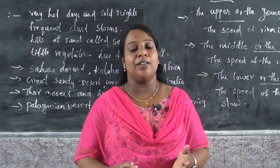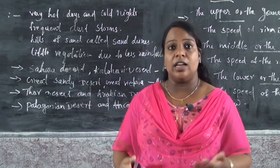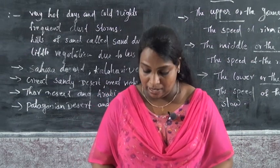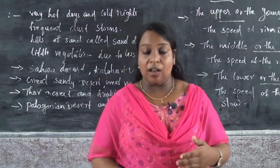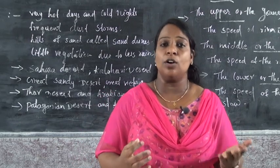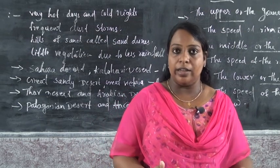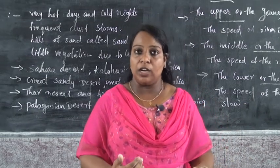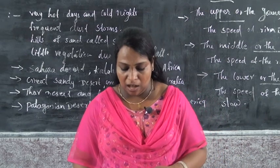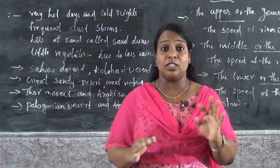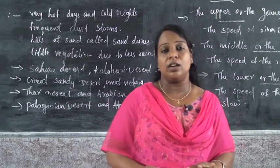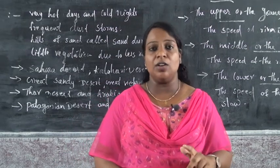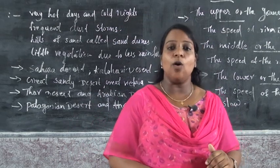The last landform is rivers. Rivers are natural channels that carry rainwater and melted water from the Himalayas. A river passes through three stages: the first is the upper or young course, the second is the middle course, and the last is the lower or old course.